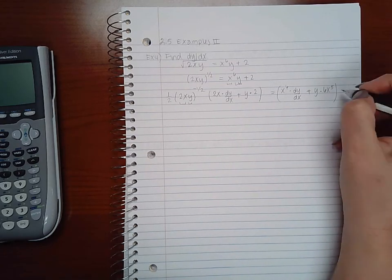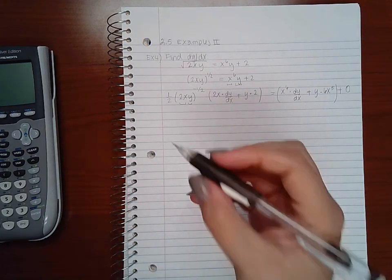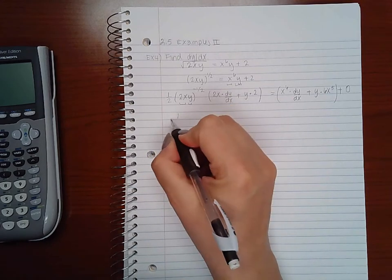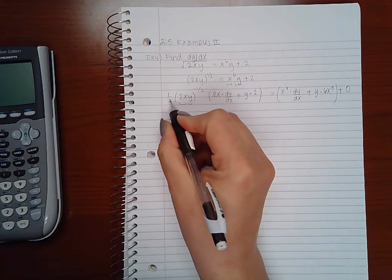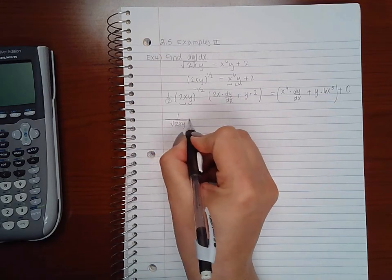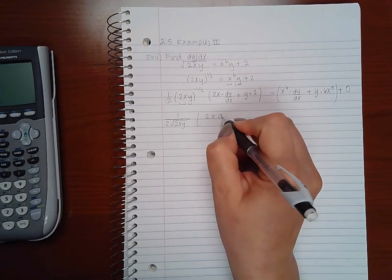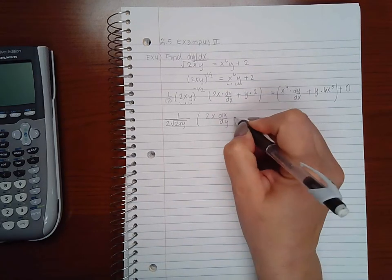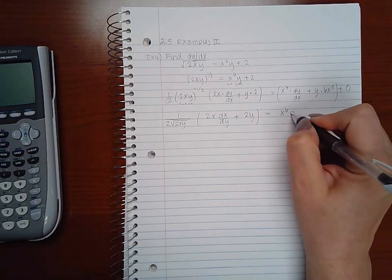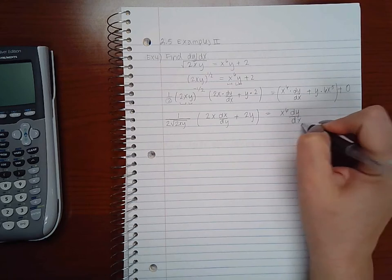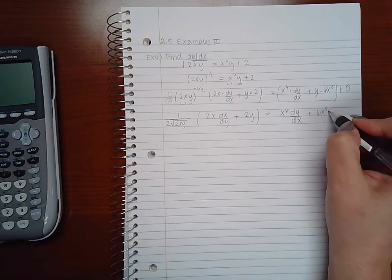Plus the derivative of the last term which is 0. So here we have 1 over the square root of 2xy and there's also a 2 downstairs that's not inside the radical. And here we have 2x dx/dy plus 2y. And here we have x to the 6 dy/dx plus 6x to the 5th y and we do not need to write the plus 0.